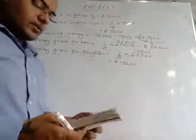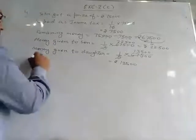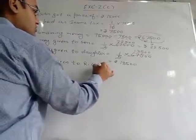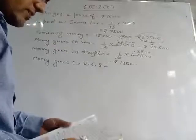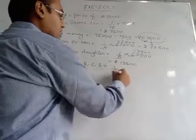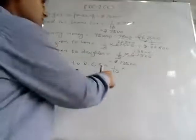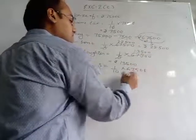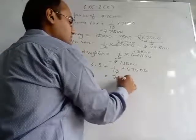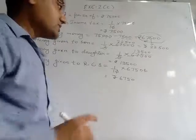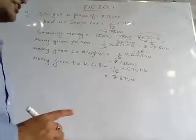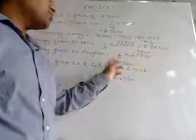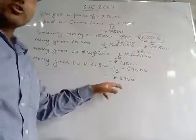He also gave 1/10 to the Red Cross Society. Money given to Red Cross Society: 1/10 is a fraction. We multiply 1/10 by 67,500. He paid 6,750 rupees to the Red Cross Society. So from the remaining amount he paid three times: to son, daughter, and Red Cross Society.